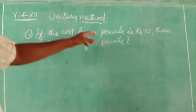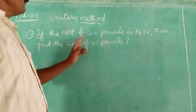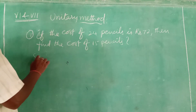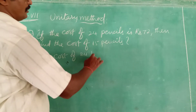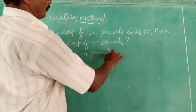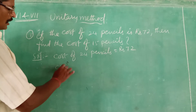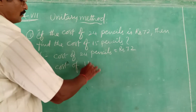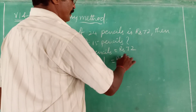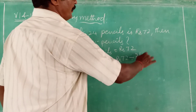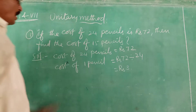Cost of 24 pencils is Rs. 72. Find the cost of 15 pencils. Solution: Cost of 24 pencils = Rs. 72. Now find the cost of 1 pencil. Cost of 1 pencil = Rs. 72 divided by 24, that is equal to Rs. 3. This is the cost of 1 pencil.